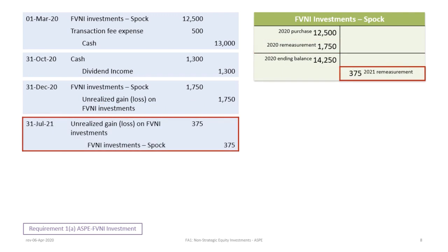Then on July 31, 2021, there's a sale. As we did with FVNI investments under IFRS, we need to first revalue the shares being sold prior to disposal. There was a $375 change in value based on 2,500 shares sold times the difference between the $2.70 fair value and the $2.85 carrying value, resulting in a negative $375. So we debit the Unrealized Loss account and credit the FVNI Investment — Spock account for $375.